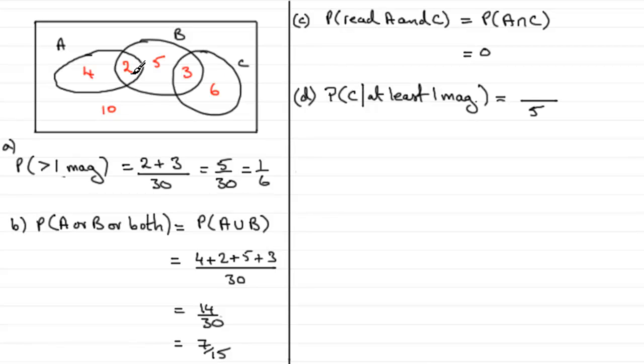Out of the five students that read at least one magazine, what's the probability that they read C? Well, how many of those two and three read magazine C? Well, it's clearly just the three. So it's three out of five students. Three fifths then.